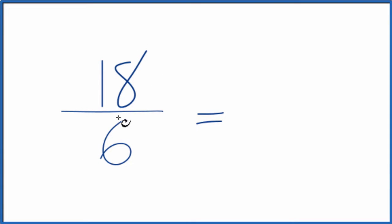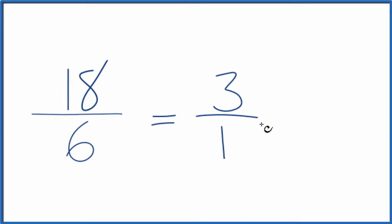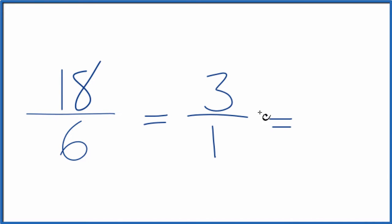6 goes into 18 three times, and 6 goes into itself one time. So if we divide 18 by 6, we get 3. And if we divide 6 by 6, we get 1. So we can simplify the fraction 18 over 6 down to 3 over 1. We can reduce this even further, because 3 divided by 1 is just 3 — so we have a whole number.